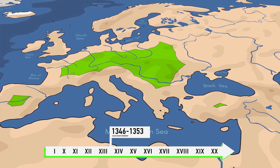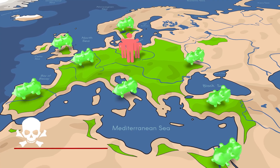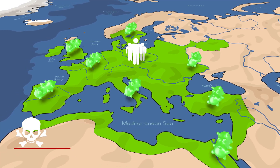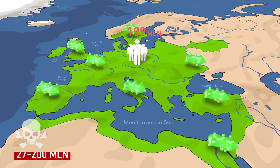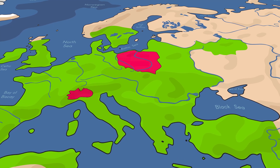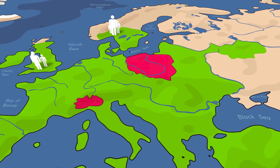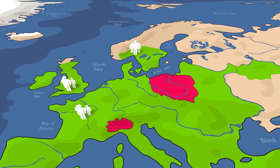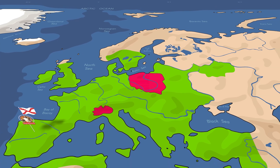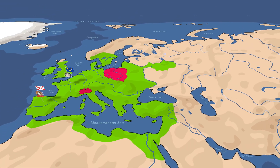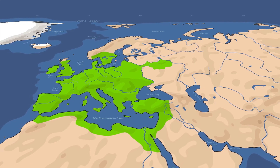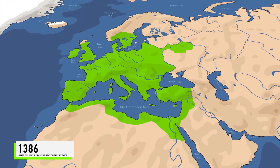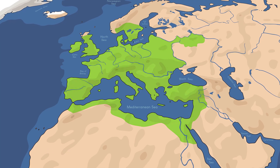The plague pandemic of 1346 to 1353 killed between 20 and 45 percent of the population of Europe. The population was reduced by 2.3 times, and the total number of deaths reached between 27 million and 200 million worldwide. Only Poland, Milan, and parts of Bohemia were spared. In England and Norway the population decreased two to three times, in France 1.7 times, and in Venice and Paris almost four times. Victims included King Alfonso XI of Castile, France's Queen Joan of Burgundy, and Prince Simeon of Moscow. Isolation and social distancing proved most effective, and in 1386 the first 40-day quarantine for newcomers was introduced in Venice.